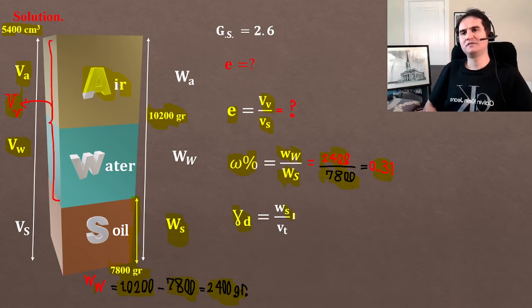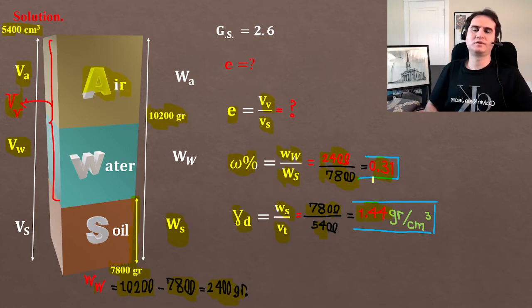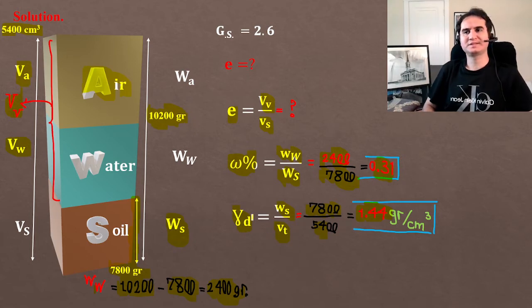Gamma D, dry unit weight, is weight of soil over total volume. Weight of soil is 7800 over 5400, which gives us 1.44 grams per cubic centimeter. That's our dry unit weight.